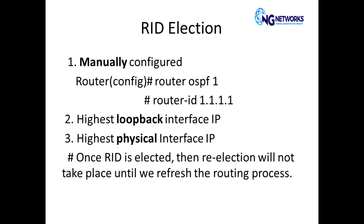It's very simple to configure the router ID manually. You simply have to go to the routing process and run the command 'router-id' followed by the ID you want to select. The router ID is basically a 32-bit number — it looks like an IP address.